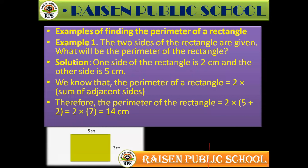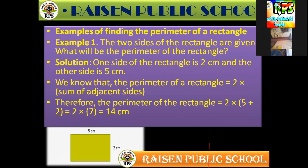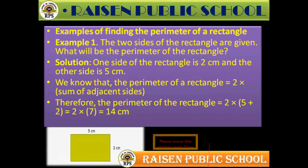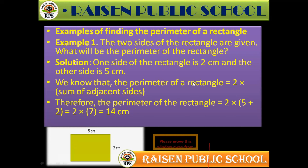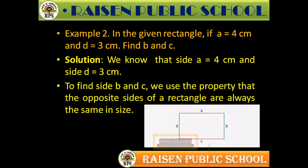What will be the perimeter of a rectangle if one side is 2 cm and the other side is 5 cm? Here l is 2 and b is 5. Using the formula: perimeter = 2 into (l + b) = 2 into (2 + 5) = 2 into 7 = 14 cm.